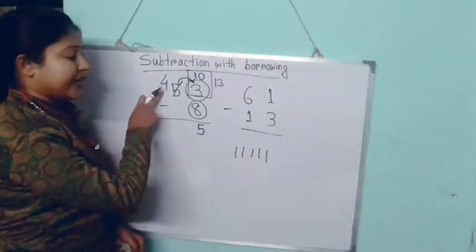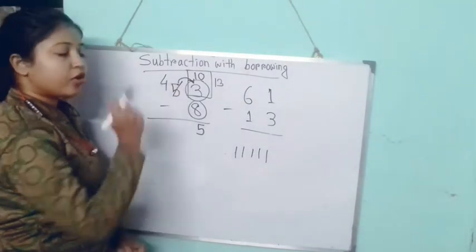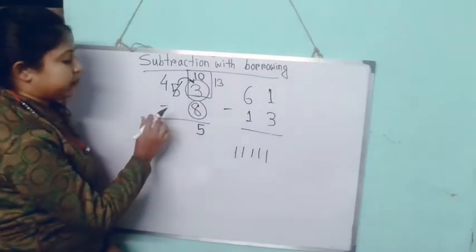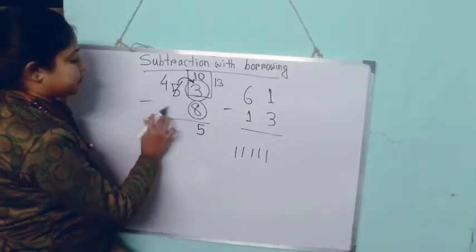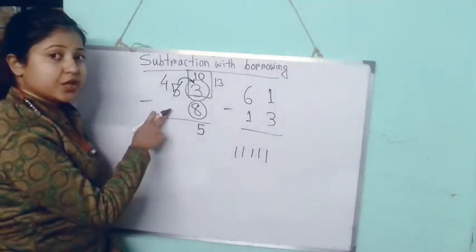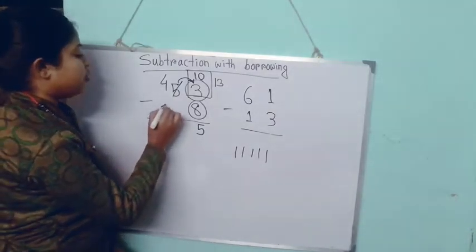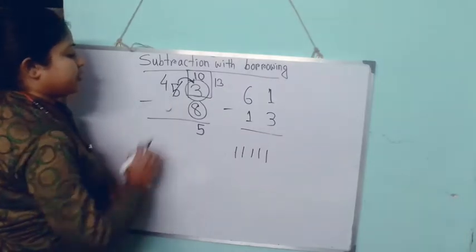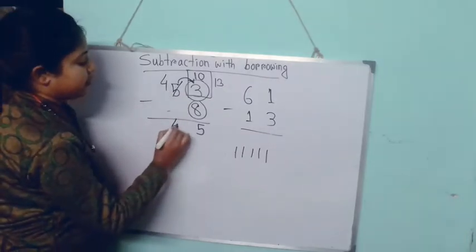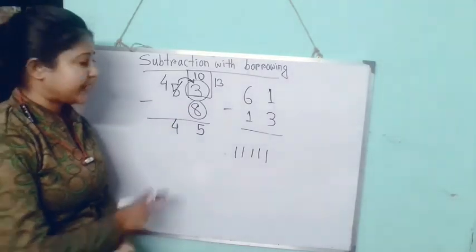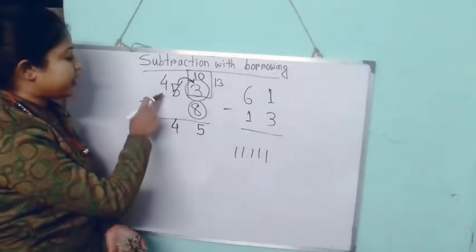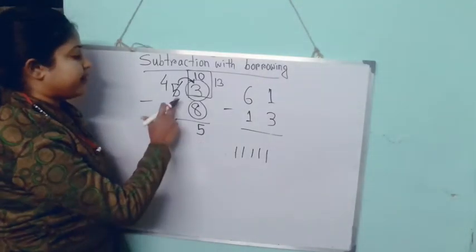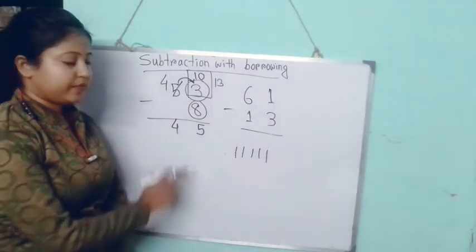Now see — here we had 4 because we already borrowed 10, so it is 4. And under 4 there is no number to subtract, meaning it is 0. So the 4 stays as 4. If there was any number we would have to subtract it, but because there is no number, it remains 4. So the answer is 45 — 53 subtract 8 equals 45.